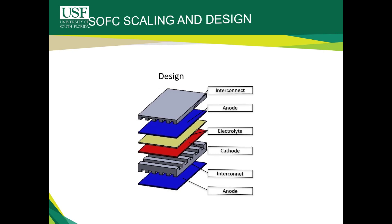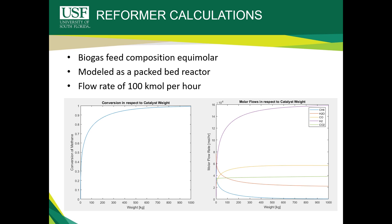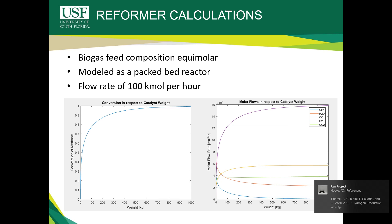We will now give numerically solved examples of this process design. MATLAB was used to model both the reformer and fuel cell results. The reformer example used an equimolar biogas composition at a flow rate of 100 kilomoles per hour, assuming the biogas contains solely methane and carbon dioxide. The figure on the left represents the conversion of methane dependent upon the amount of catalyst used, while the figure on the right shows molar flow composition based on catalyst amount and methane converted. The equations used can be seen in the MATLAB program accompanying this screencast.